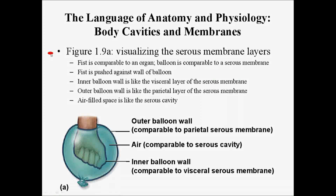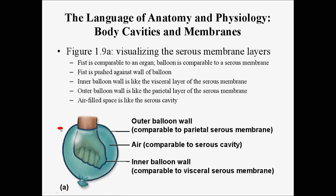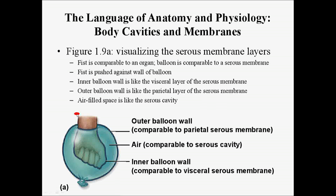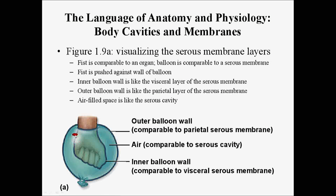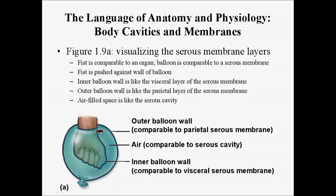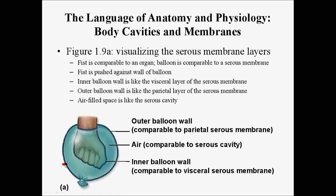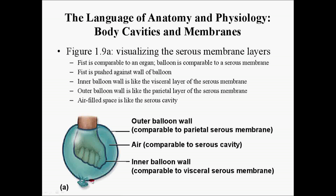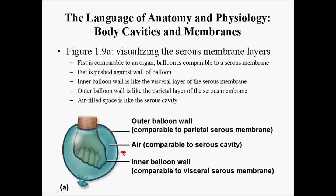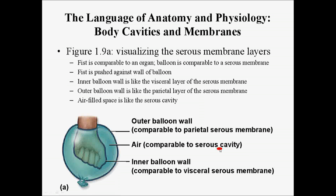As an example, to help visualize the serous membrane: if you think of the fist as being an organ and the balloon as being comparable to a serous membrane, if you were to push your fist into the balloon, the inner balloon wall is like the visceral layer of the serous membrane. The outer balloon wall is analogous to the parietal layer of the serous membrane, and the space in between is analogous to the serous cavity.